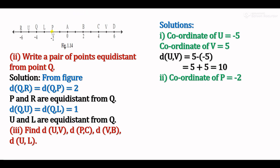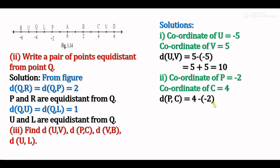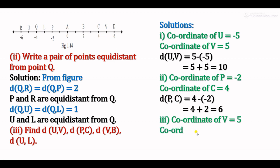Distance PC: coordinate of P is minus 2, coordinate of C is 4. Since 4 is greater than minus 2, distance PC equals 4 minus (minus 2) equals 4 plus 2 equals 6 units. Distance VB: coordinate of V is 5, coordinate of B is 2. Since 5 is greater than 2, distance VB equals 5 minus 2 equals 3 units.